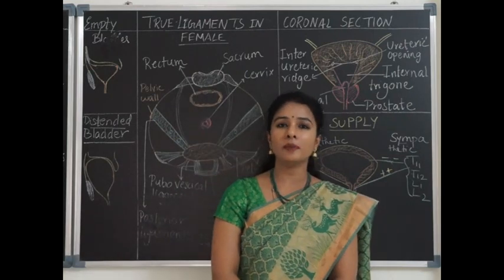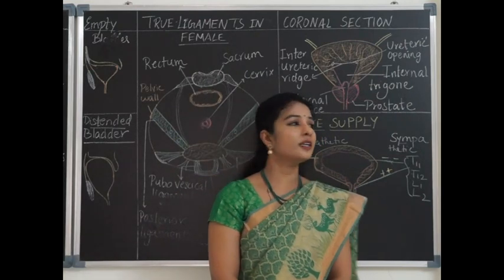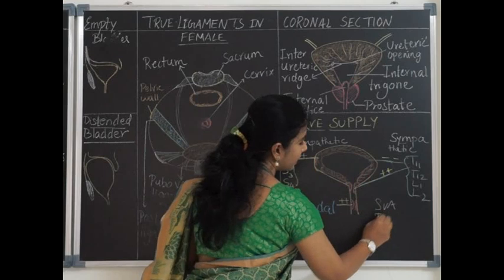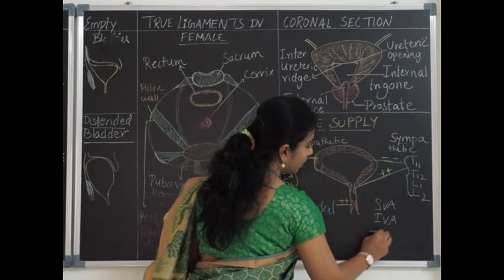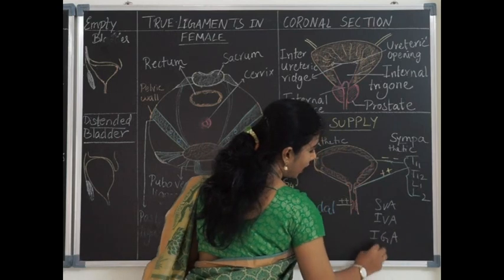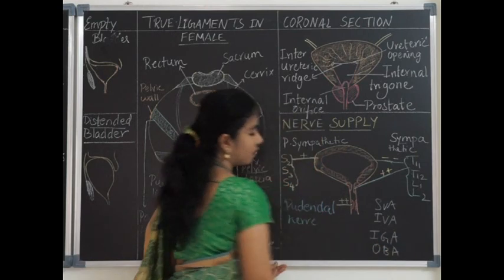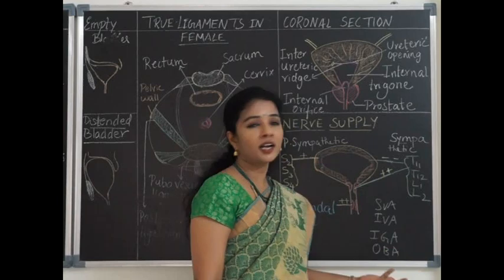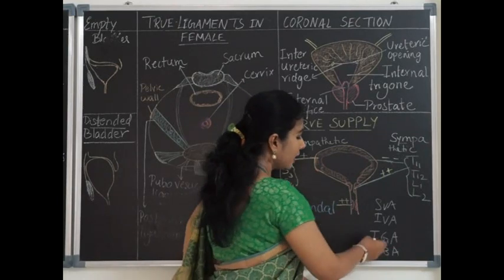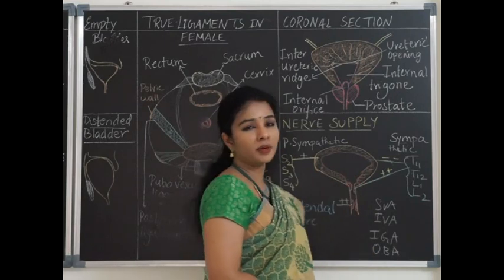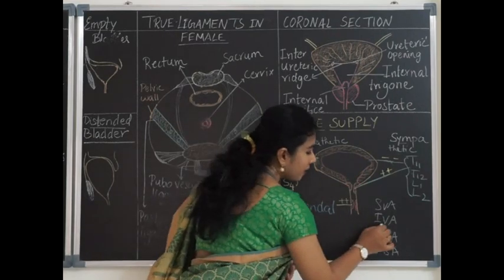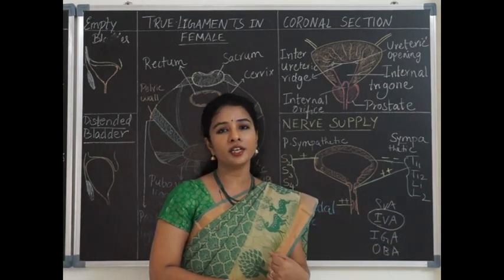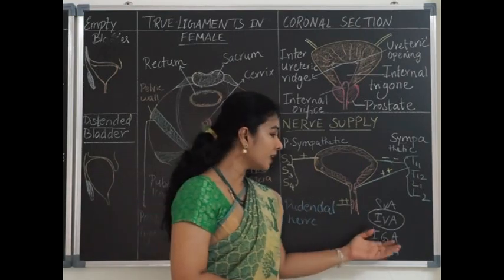The urinary bladder is supplied by the superior vesical artery, inferior vesical artery, and branches from the inferior gluteal and obturator arteries — all branches of the internal iliac artery in males. In females, the inferior vesical artery is replaced by vaginal arteries, and branches of uterine arteries also contribute.